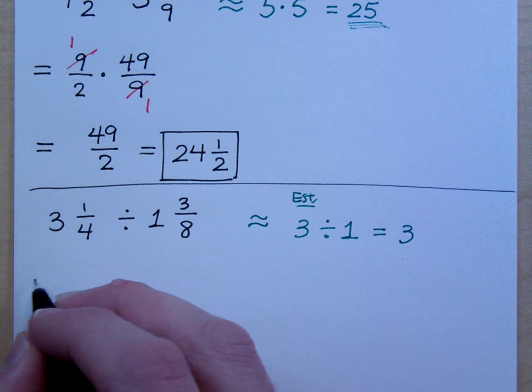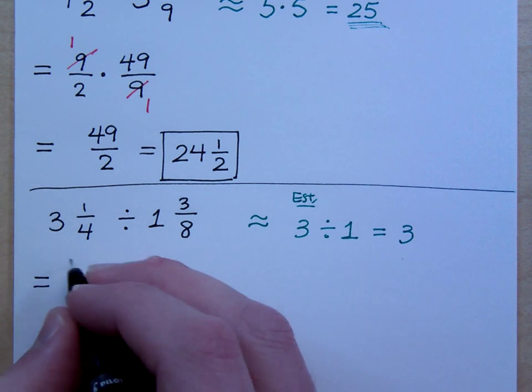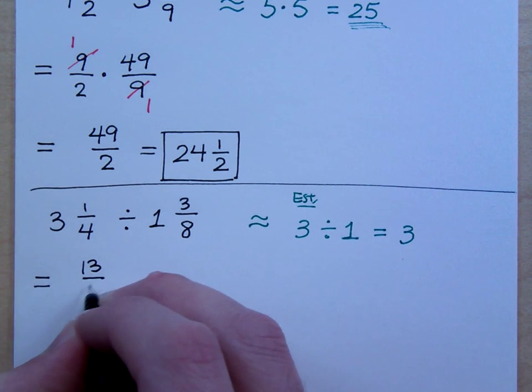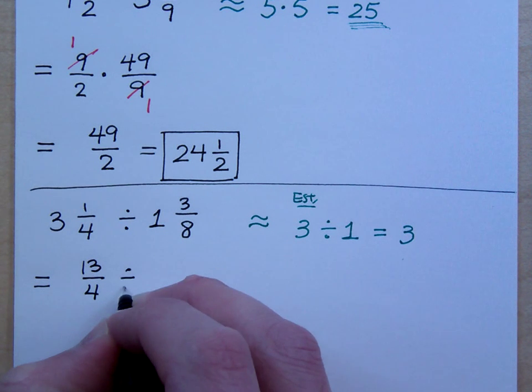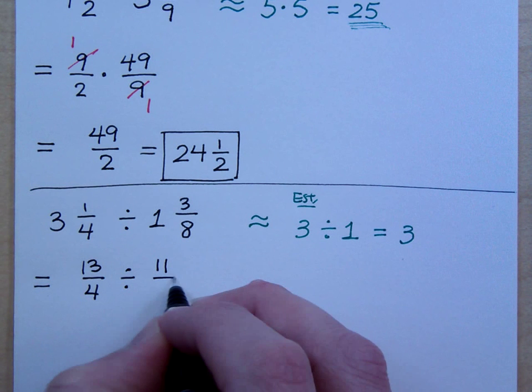Well, what do you think I'm going to do here? When I was multiplying mixed numbers, I converted both of them to improper fractions. What do you think I'll do here? Do the same thing. So 3 and 1 fourth converts to what? 13 over 4. Divided by what? 11 over 8.